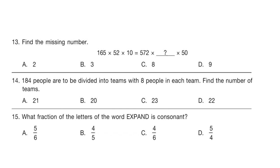Question 13: Find the missing number. 165 × 52 × 10 = 572 × ? × 50. First, multiply all three numbers on the left-hand side, multiply both numbers on the right-hand side, and divide the left-hand side by the right-hand side. The correct answer is option B, which is 3.